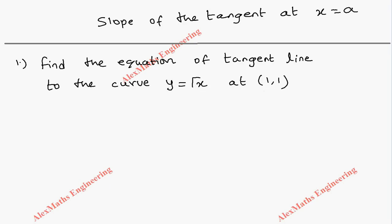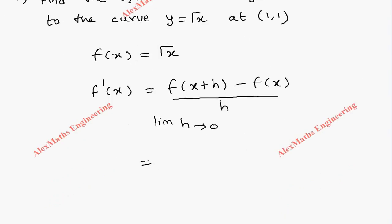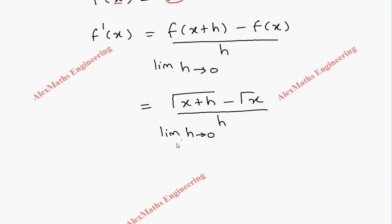First we have to find the derivative. We have f(x) = √x, and we need to find f'(x), which is the limit as h tends to 0 of [f(x+h) - f(x)] / h. Now f(x+h) means we replace x with x+h, so we get [√(x+h) - √x] / h, with the limit h tending to 0. When we put h = 0, we get an indeterminate form.